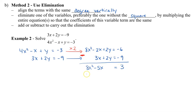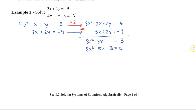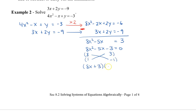Now we're going to move everything to one side: 8x squared minus 5x minus 3 equals 0. To solve this equation I can actually factor. Using my guess and check method, 8 times negative 1 gives me negative 8, and 1 times 3 gives me 3, so negative 8 plus 3 gives me negative 5. And 3 times negative 1 gives me the negative 3 constant. So I have (8x plus 3)(x minus 1) equals 0. If you forget how to factor, you can watch some of my old videos on factoring.